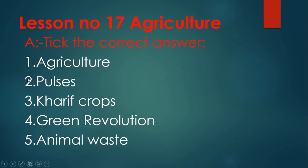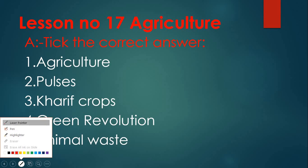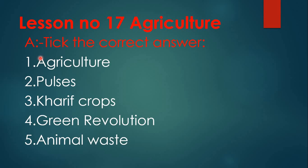Children, I have not written the questions — I have given only the answers. You are supposed to write the questions as I explained earlier. So first, lesson number 17: Agriculture. Section A: Take the correct answer. The first question — cultivation of land is called agriculture.